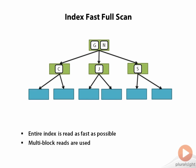The next operation to discuss is an index fast full scan operation. In this operation, Oracle is going to read the entire index in an unsorted order. What this means is that Oracle is not traversing the tree structure of the index. It's just reading all of the blocks of the index as fast as it can.